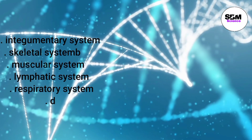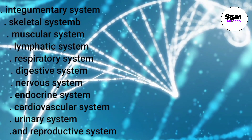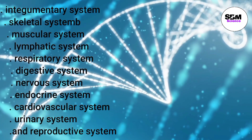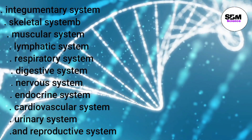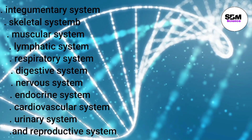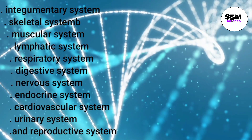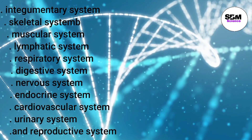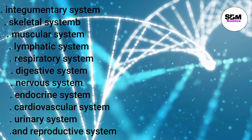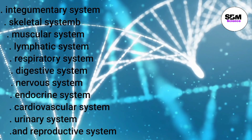The 11 organ systems are: integumentary system, skeletal system, muscular system, lymphatic system, respiratory system, digestive system, nervous system, endocrine system, cardiovascular system, urinary system, and reproductive system.